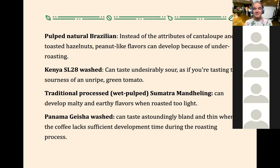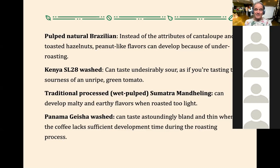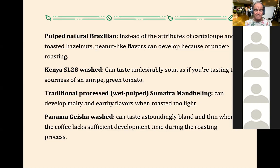In the case of a prolific coffee type like a Kenyan SL-28 washed coffee, instead of the acidity featuring sweetness, it can become undesirably sour — as if you're tasting the sourness of an unripe green tomato. Or in the case of Sumatra coffees, the traditional wet-hulled Sumatra Mandheling can have very distinct malty and earthy flavors when roasted too light. Sumatra is a coffee traditionally used by roasters who like very dark roasts, but if under-roasted it can be very undesirable.